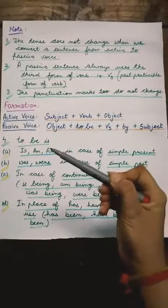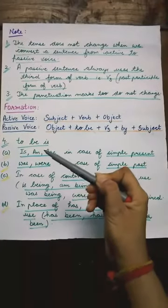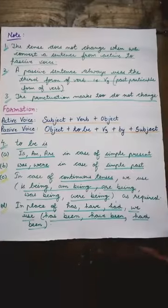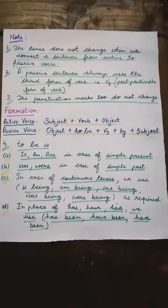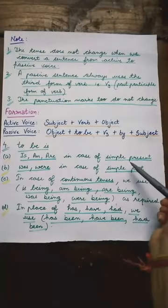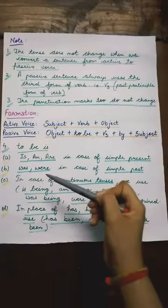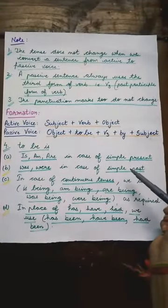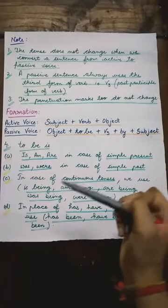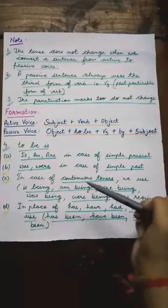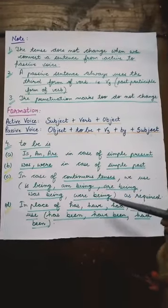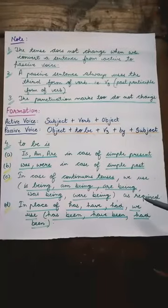Now point number four is about to-be verbs जिनको हम use करेंगे passive sentences में. वो कौन-कौन सी हो सकती हैं? Is, am, are in case of simple present tense; was or were in case of simple past tense; in case of continuous tenses we use is being, am being, are being, was being, were being as required.